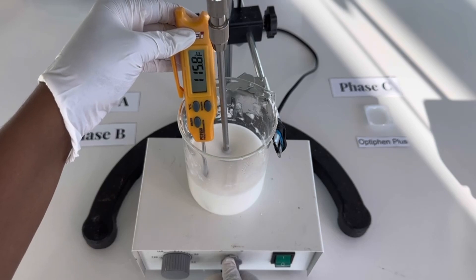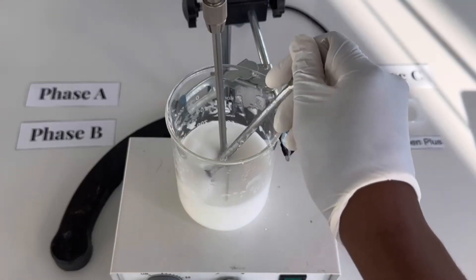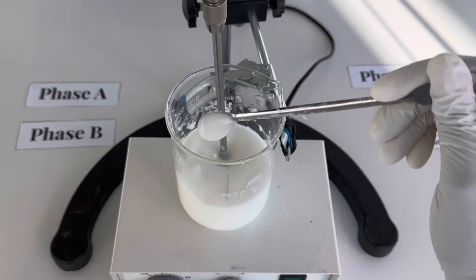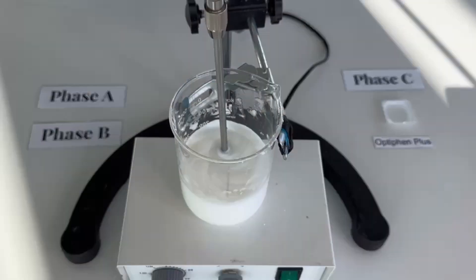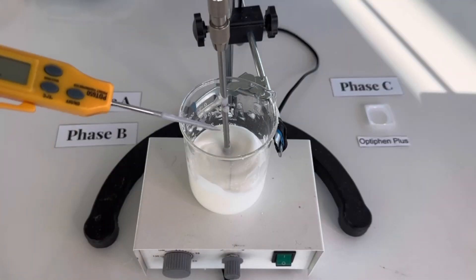Now you just want to blend this mixture until it cools down, and you'll notice as it cools the thicker it'll get. So be patient—it may take about 30 minutes to see your conditioner thicken up. Once the combination of Phase A and Phase B has fully cooled down, you'll see you have a nice thick conditioner.